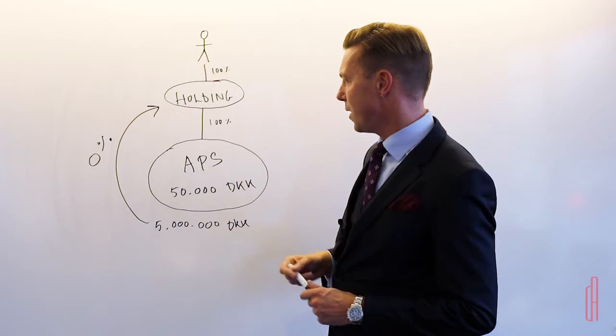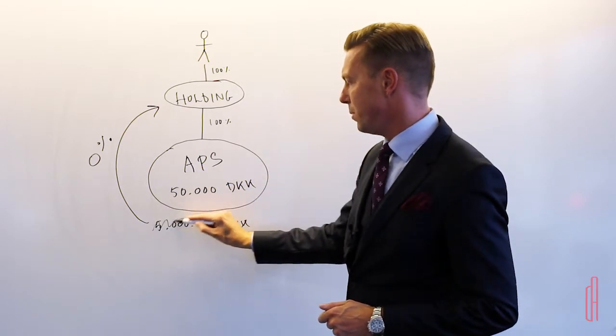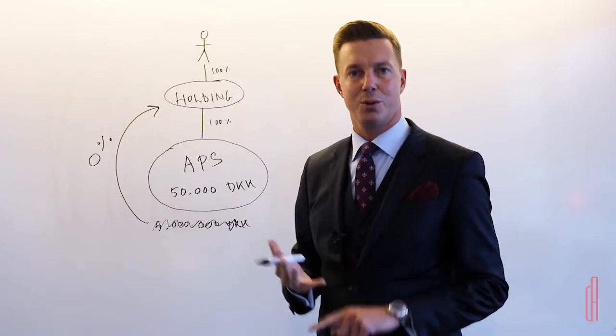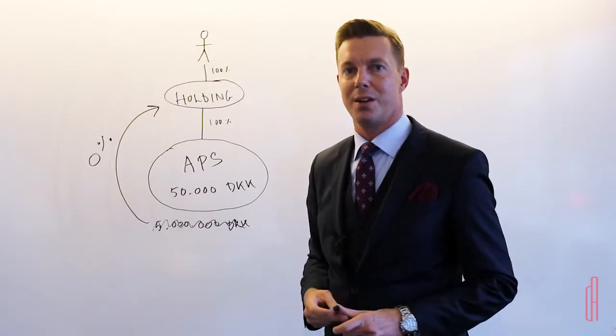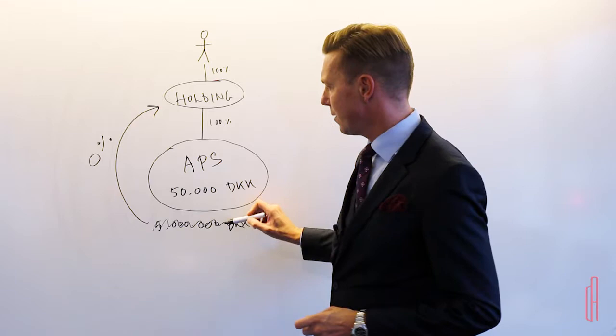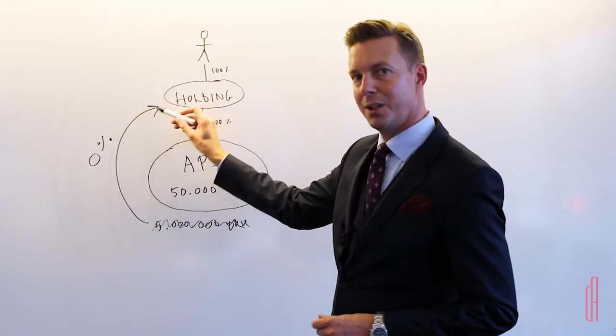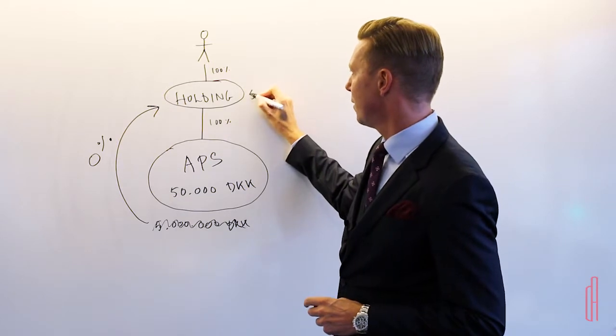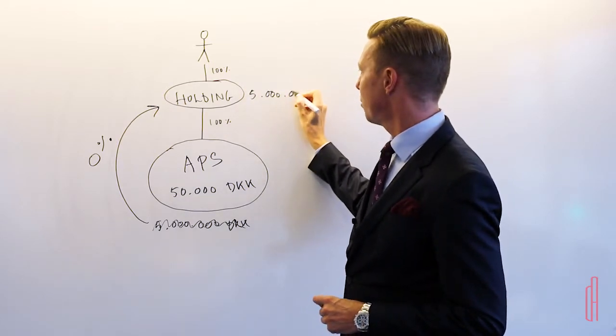So instead of having the five million in the APS, where they are vulnerable and they're liable for lawsuits, disputes with suppliers, with clients, instead we can move them up here after the year is finished and we have the annual report and we know the revenue. And instead we can put it on the bank account up here.